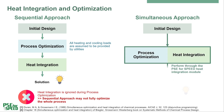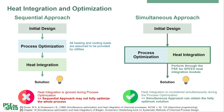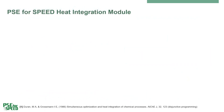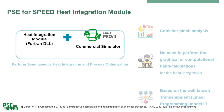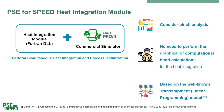The PSE for Speed Company has developed a module for simultaneous heat integration and process optimization to determine the optimal utility requirement while also optimizing the process design. The starting point is an initial design. The heat integration and optimization steps are performed simultaneously through the PSE for Speed heat integration module. In this presentation, we highlight the use of the PSE for Speed heat integration module within the Aspen Plus v2 commercial simulator — adding our module as an external tool within the simulator and embedding the heat integration option within the computation of the objective function for process optimization.